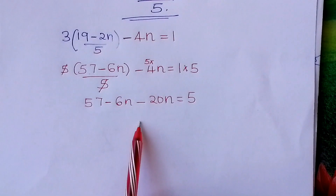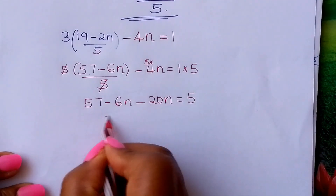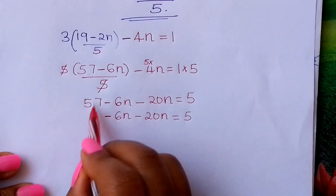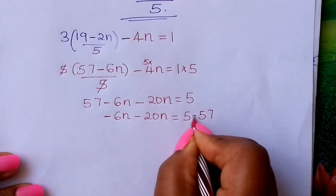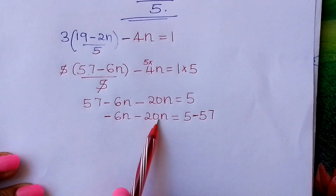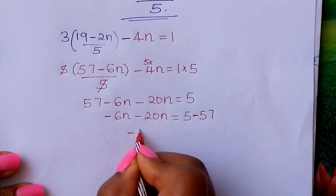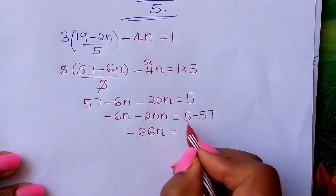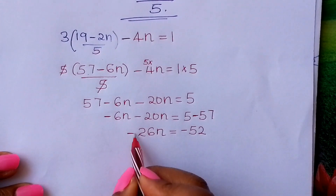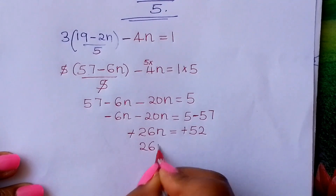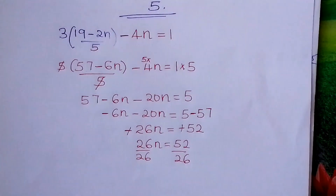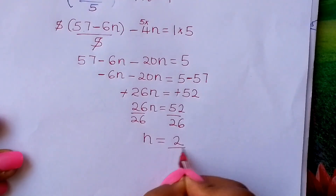From there, take the like terms together. Take 57 to the other side — it becomes negative 57. Negative 6n minus 20n gives negative 26n. And 5 minus 57 is negative 52. We have negatives on both sides — cancel them out. So 26n equals 52. Divide by 26, and therefore n equals 2.